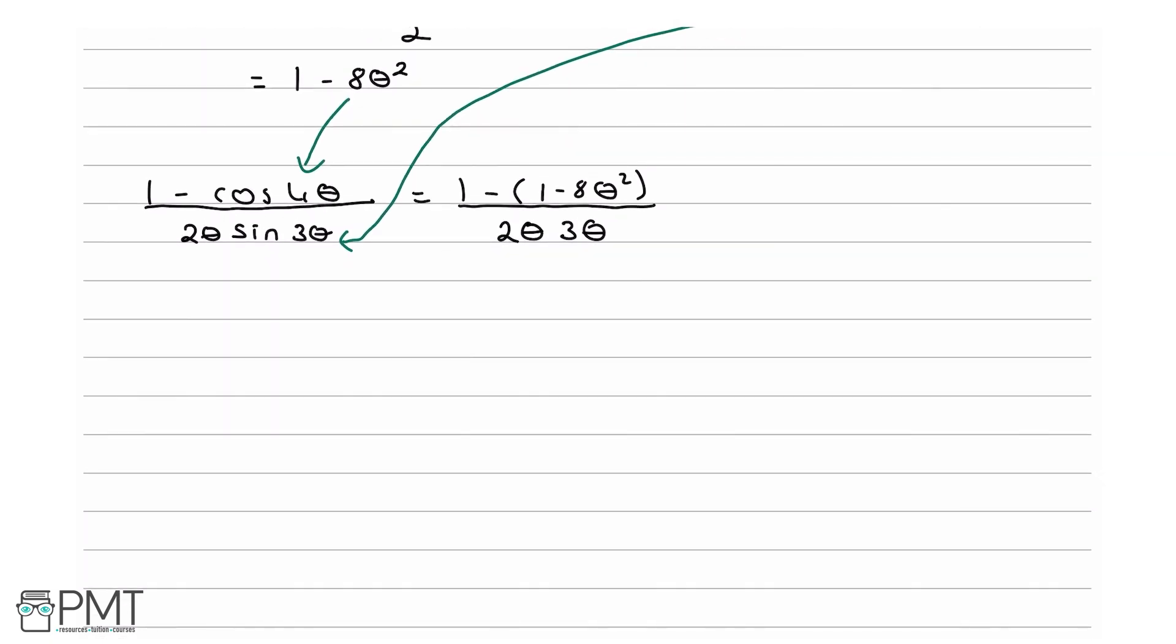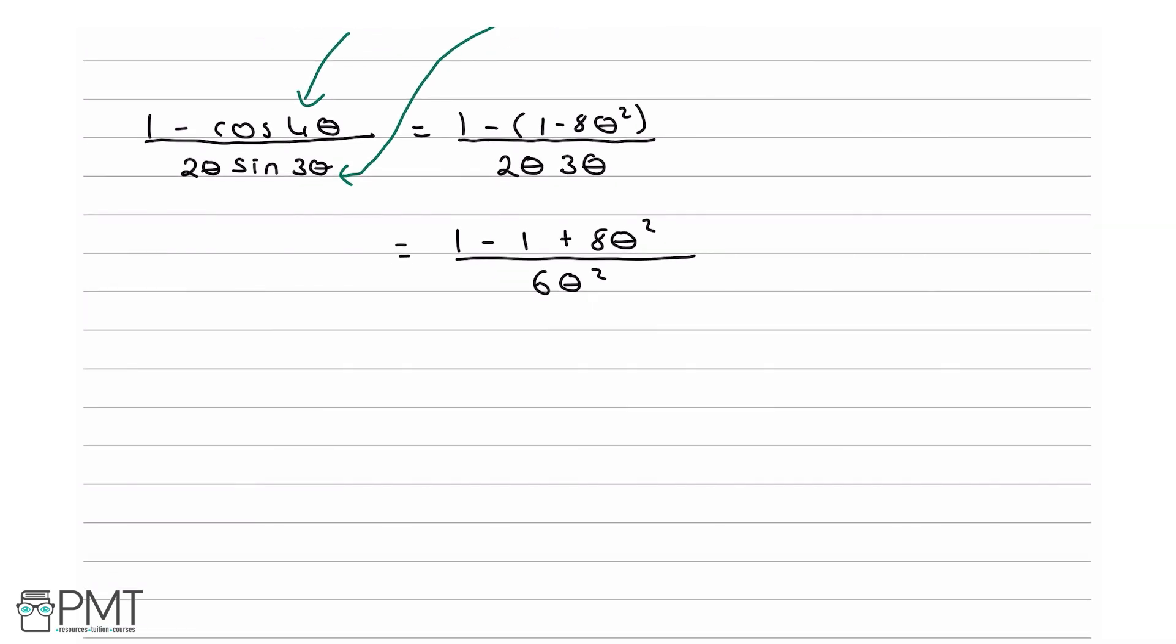Now let's carry out some simple algebra. This equals (1 - 1 + 8θ²)/(6θ²). The 1 - 1 disappears, so we're left with 8θ²/6θ², which equals 8/6, which simplifies to 4/3.